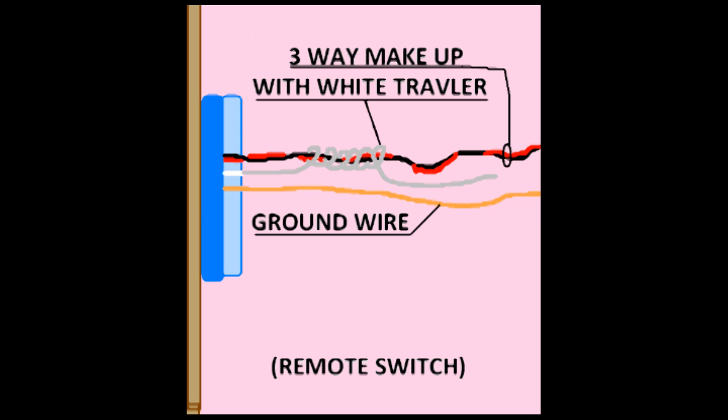We again look at the remote switch box and you see in real time how the other three-way is made up. The red and black are travelers and the white becomes the switch leg. You also have a ground wire so you can ground your three-way switch.